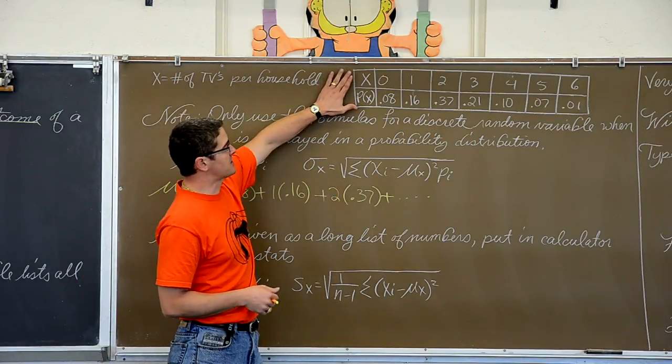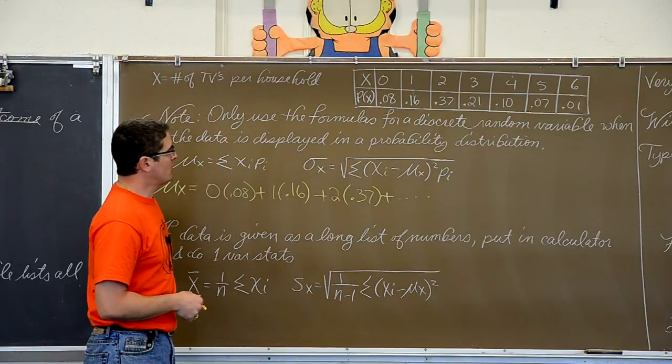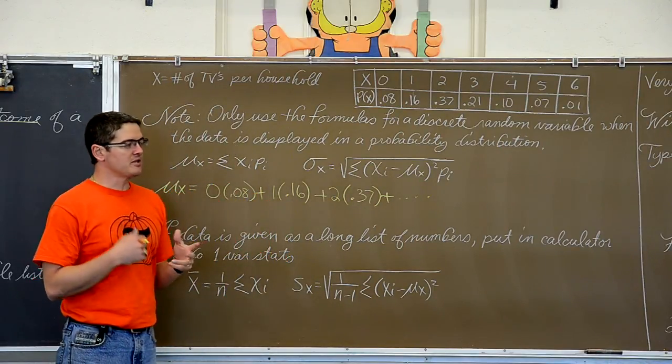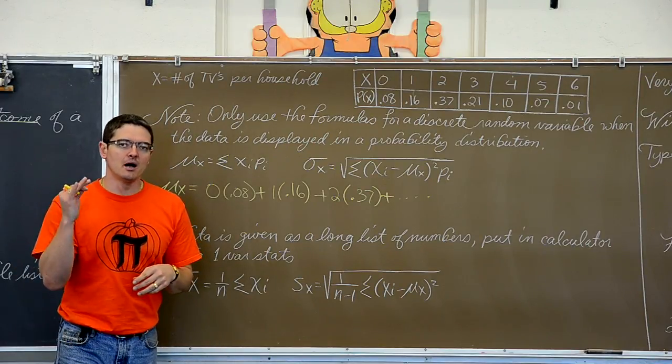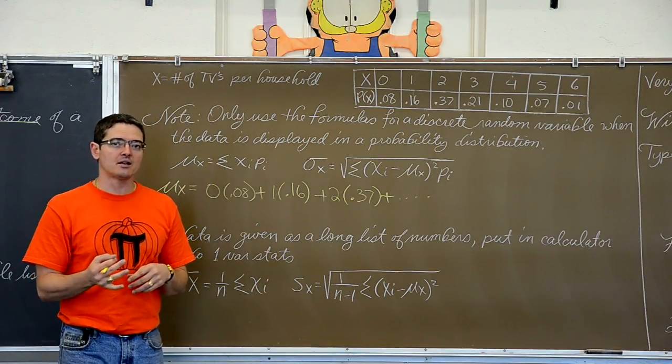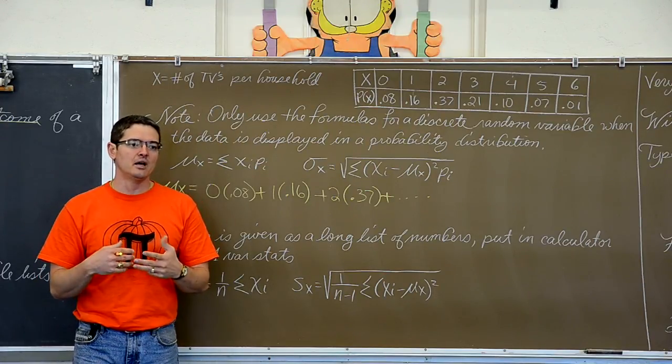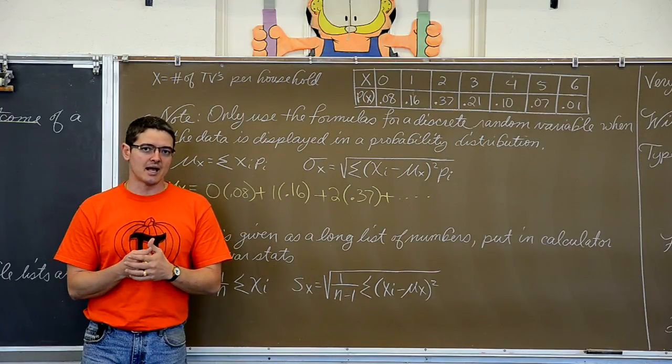And we have this PDF table set up for the number of TVs in a household. So we are about to scan over to the next panel of notes and we are going to be talking about continuous random variables. That means we are going to bring up one more time bell curves and z-score calculations, and that z-score calculation is going to get repeated many times now in the second half of our intro to statistics class.